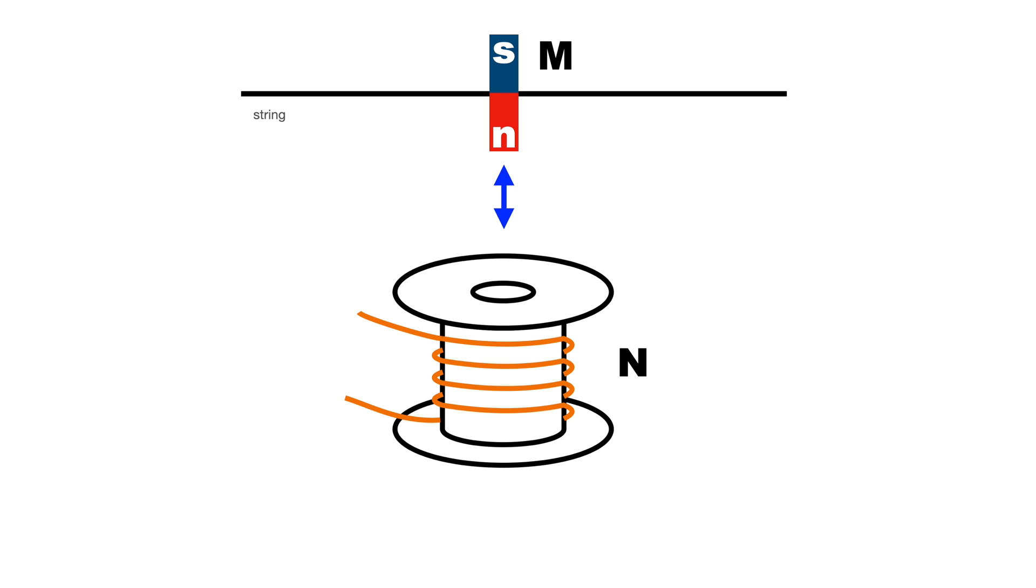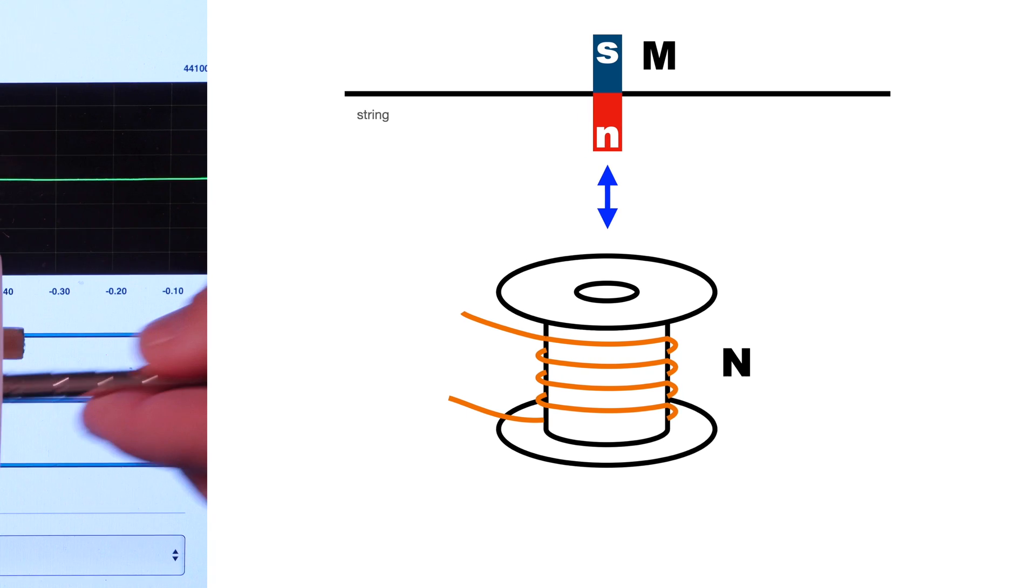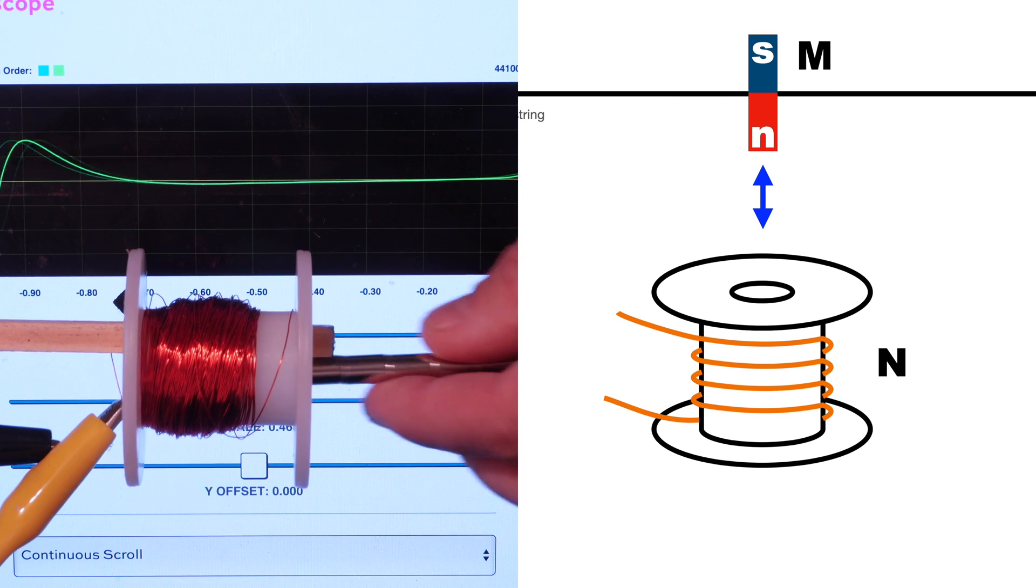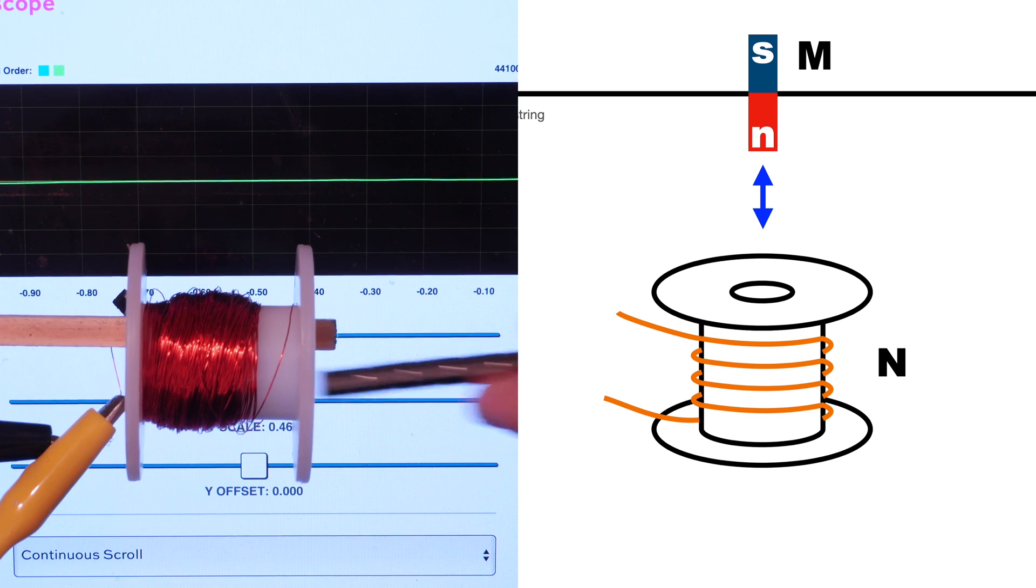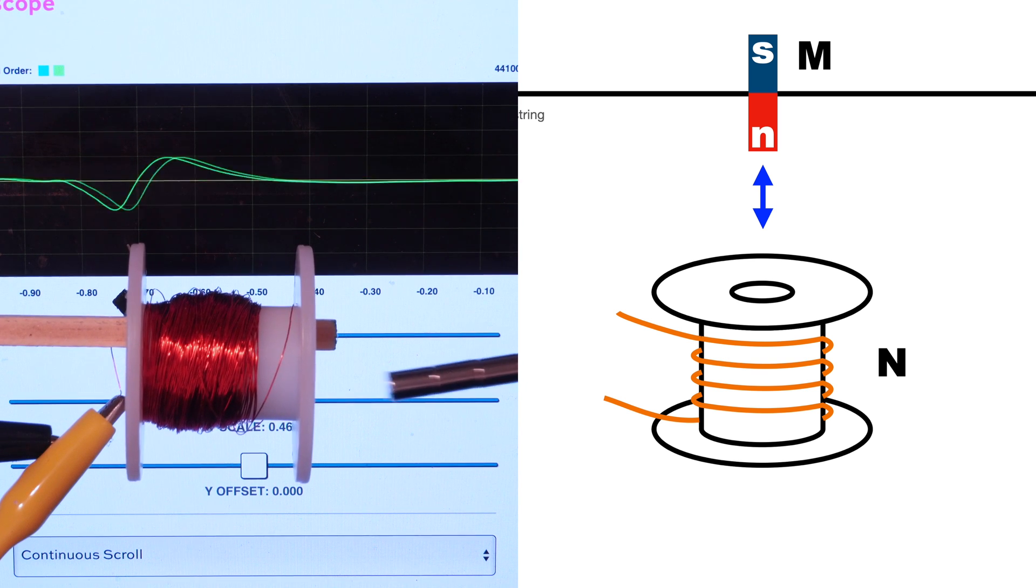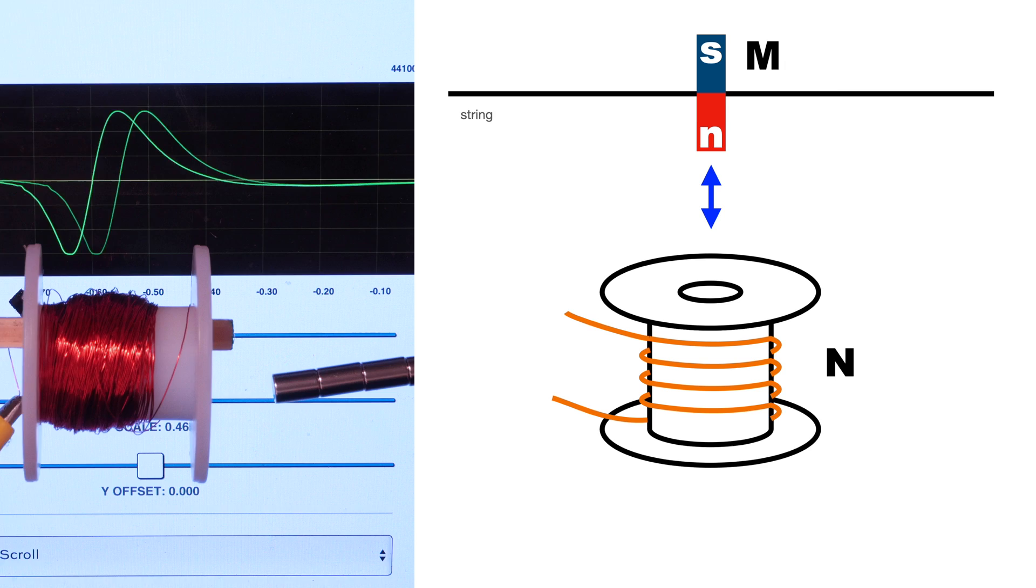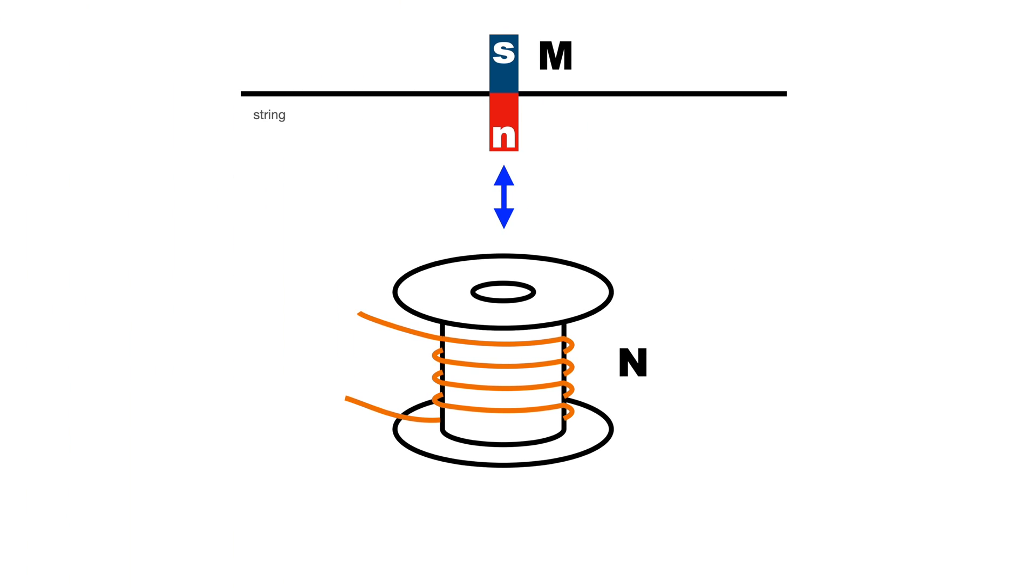And when the string vibrates, this whole thing reduces to this demo you might have seen where moving a magnet in the vicinity of a coil of wires creates a voltage between the two ends of that wire. Except that here the string is the magnet and here's the voltage. And when I say that I want a stronger coil, what I mean is I want more voltage here.